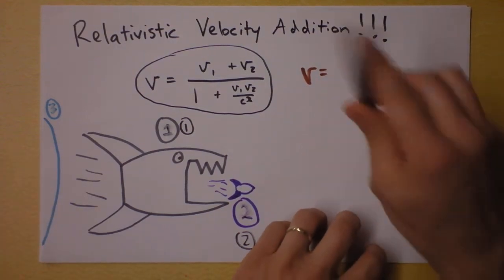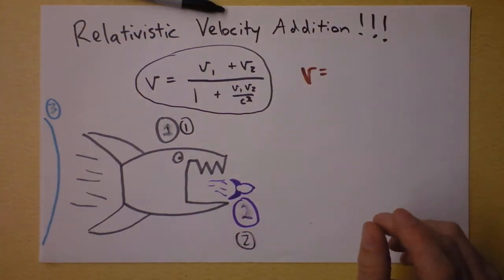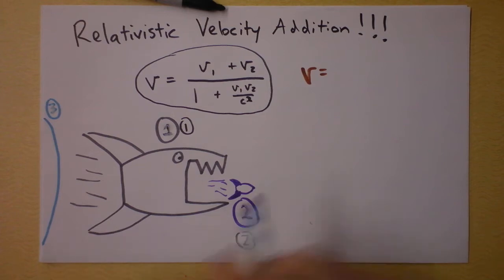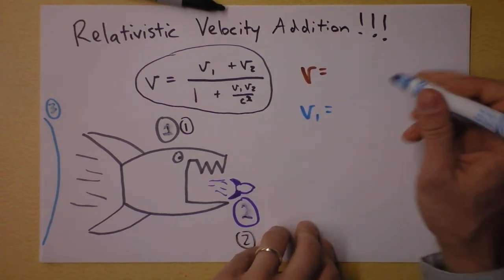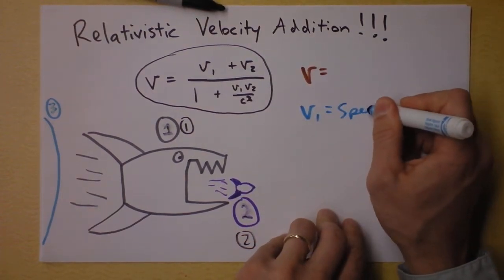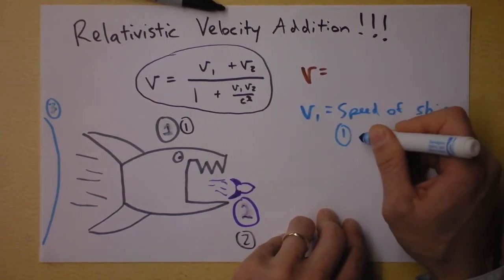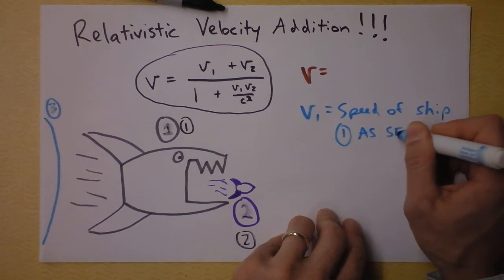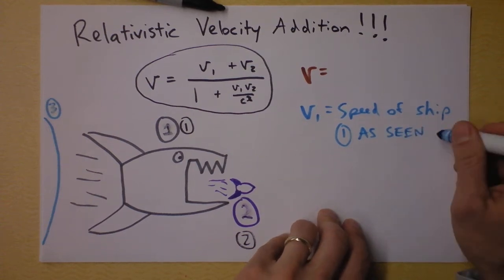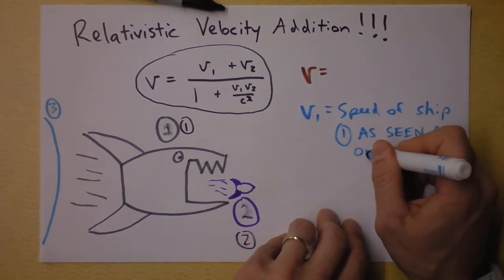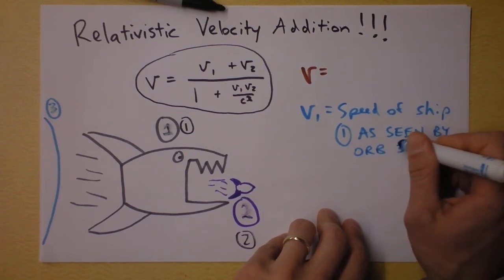First, going to define V1. So V1 is seen by the orb, so I'm going to draw it in blue. V1 is the speed of ship 1 as seen by orb. This is very important, I'll put it in capitals. I'm going to call it orb 3, okay?